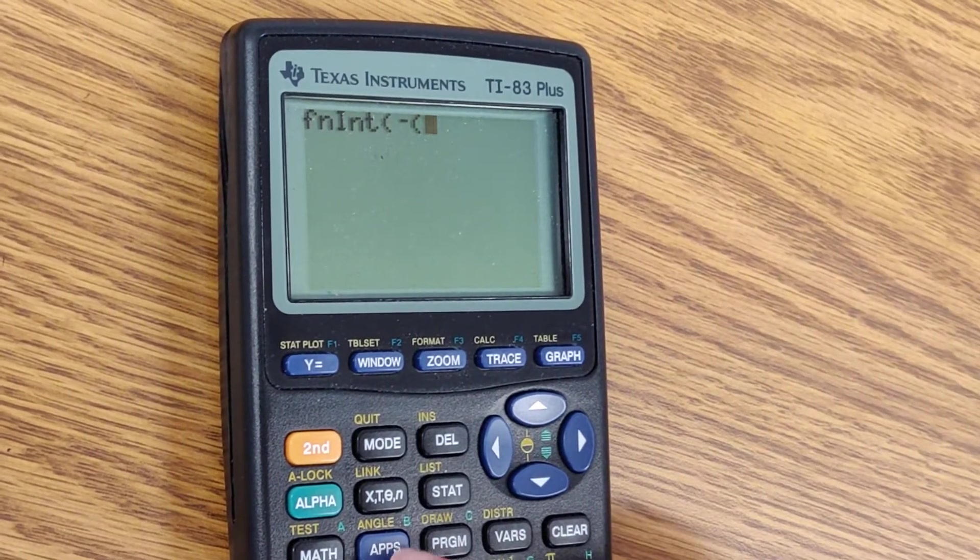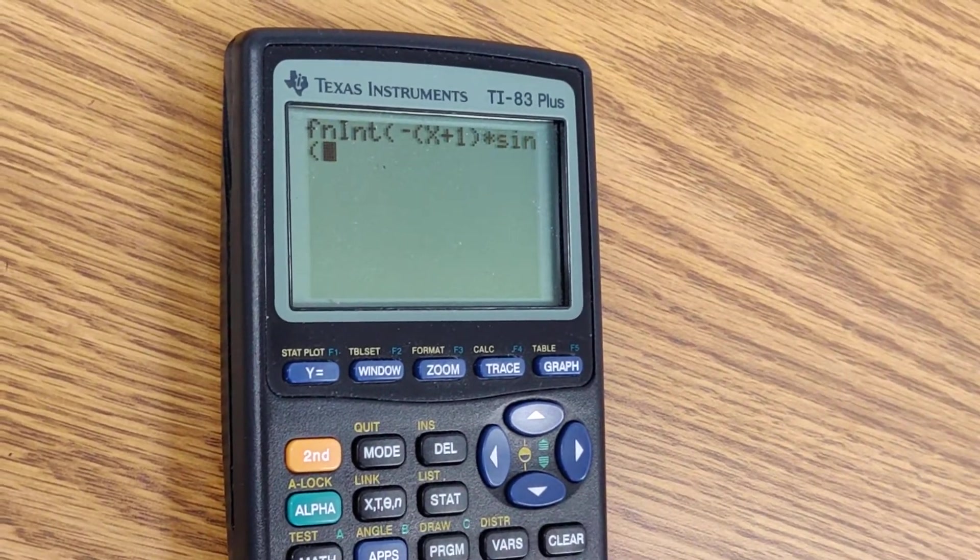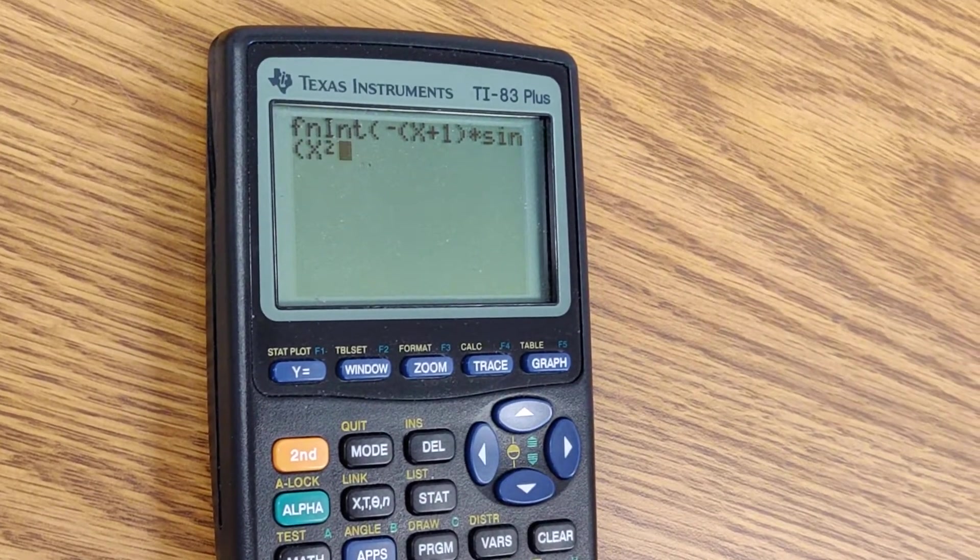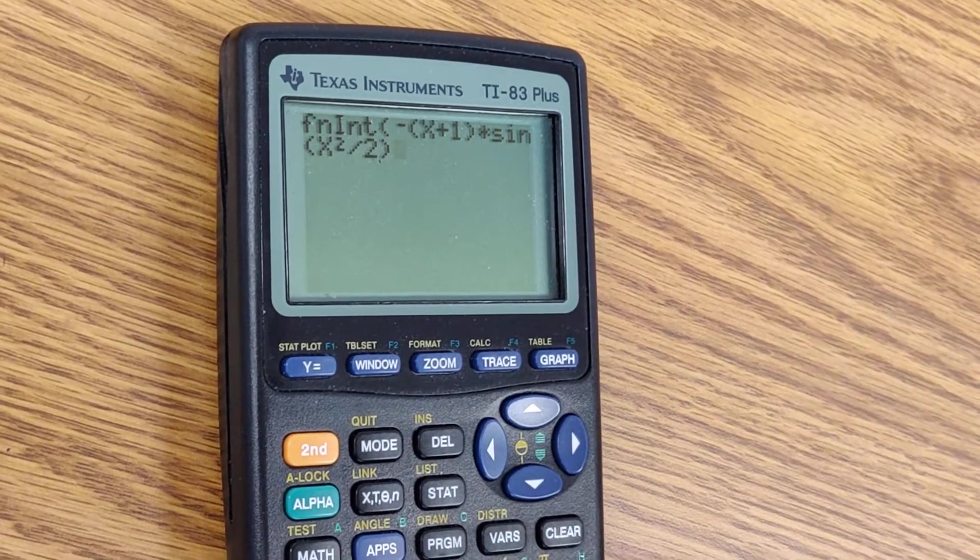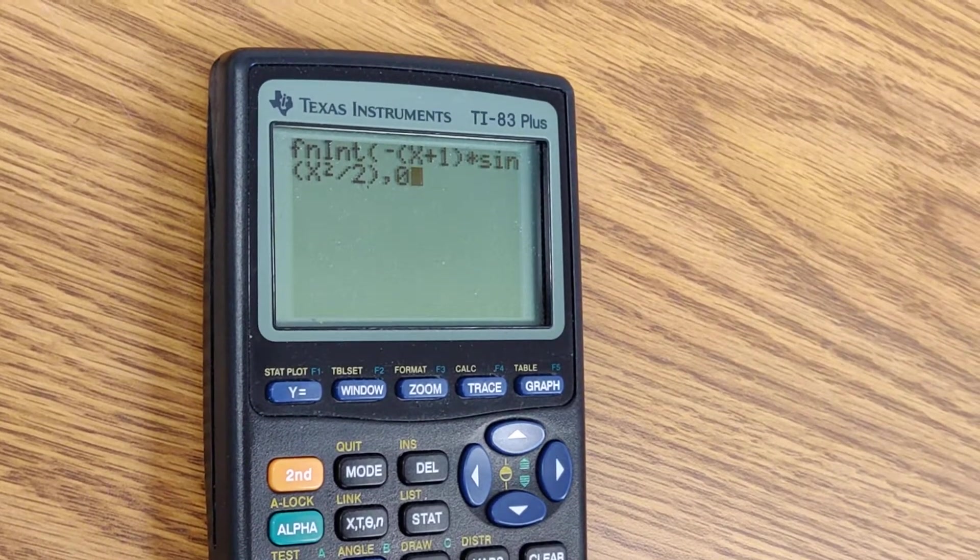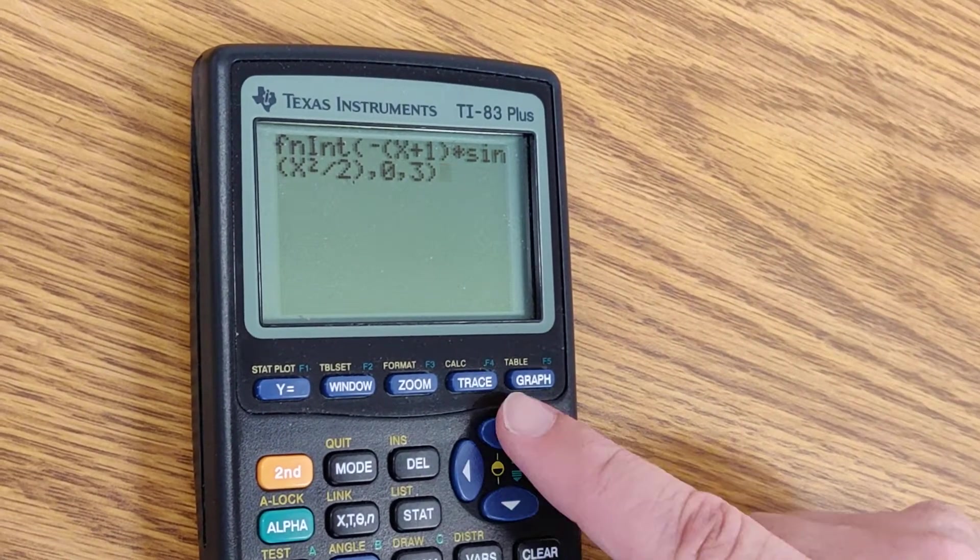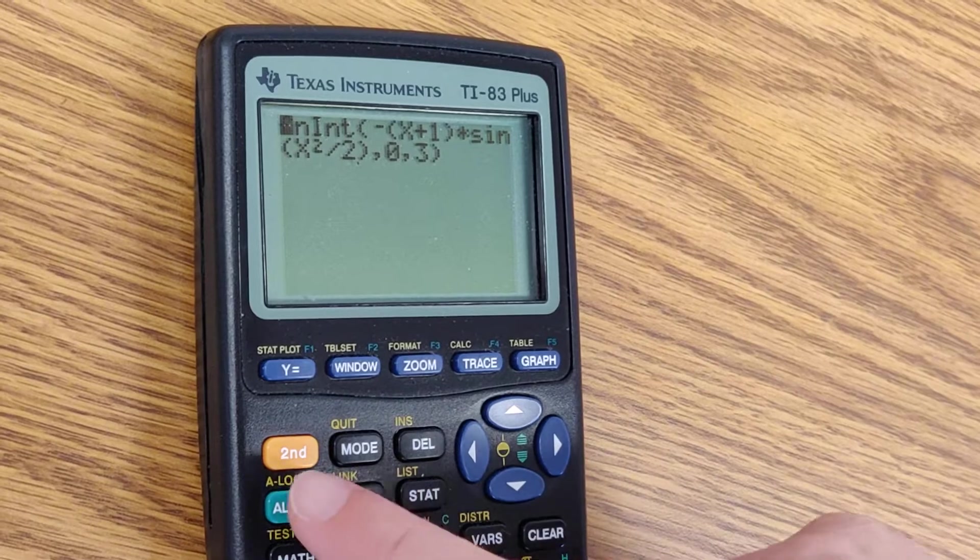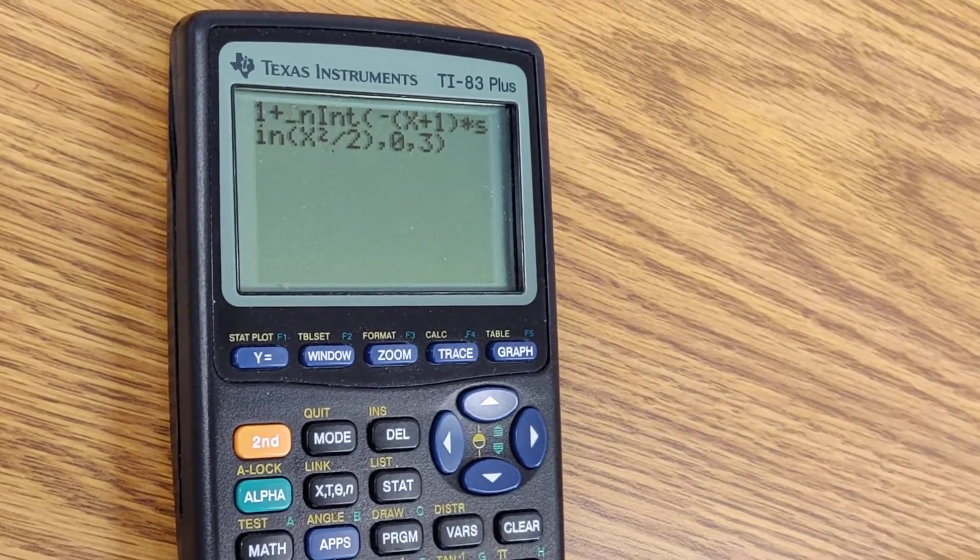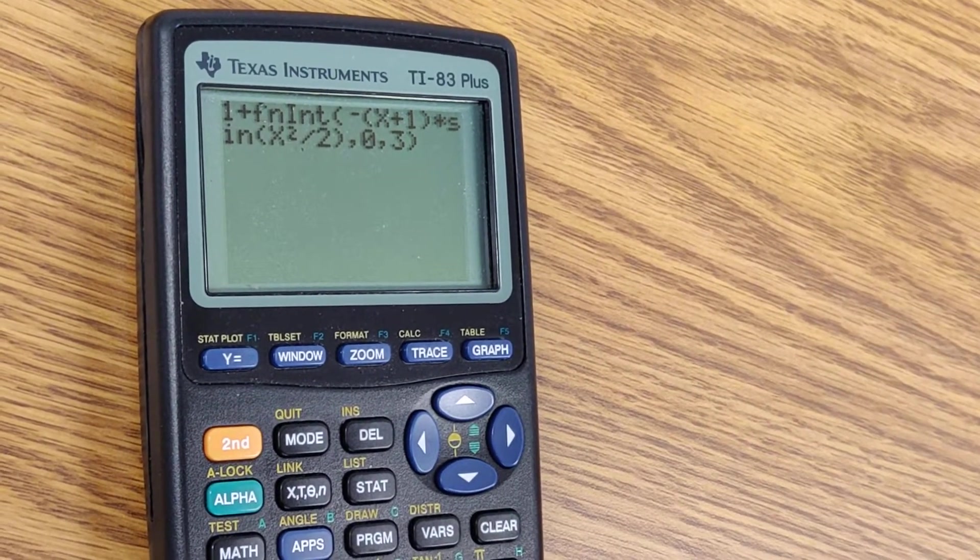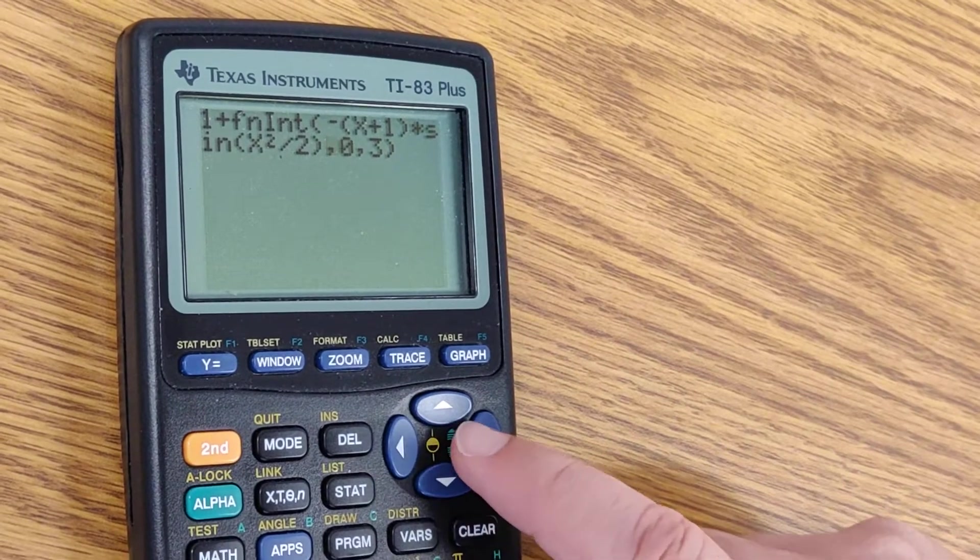So this is the opposite of x plus 1. This is what your v of t is equal to, times sine of x squared divided by 2. Close parentheses, which I did. Close parentheses, and then don't forget to add 1 to all of this. The 1 represents the position at time t equals 0. So enter.